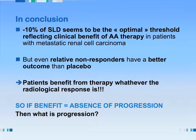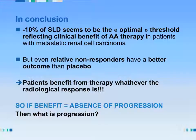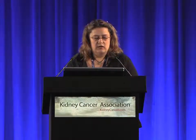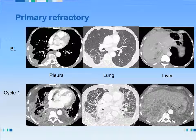And then we get to our question: what is progression? What we have been seeing is that there are definitely different patient profiles. The first profile is primary refractory patients — these are the easy ones. Basically the treatment doesn't work at all. Here's an example of a patient who had pleural lung lesions, liver lesions, and after a single cycle you see that everything progresses in a very obvious way. These are easy — change your therapy.